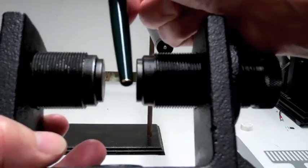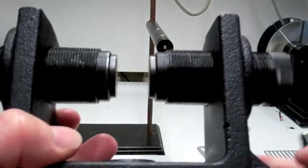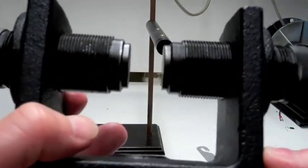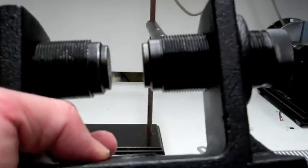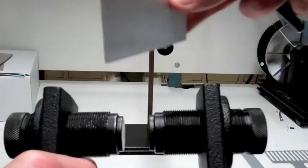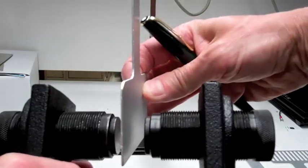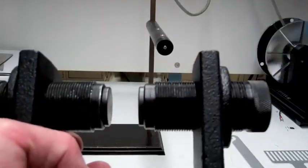There's a fairly uniform field in between here and these are actually fairly strong magnets. If I put a piece of steel in here, it would stick and I probably wouldn't be strong enough to pull it apart.